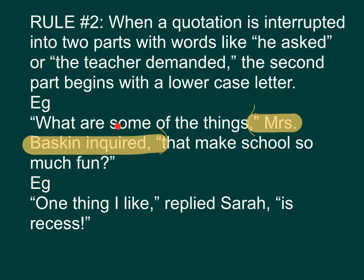讲到差不多，然后中间会加上说话者，说，然后后面呢，就会讲完那句说话的后半部分。这样啦。整句的意思大概就是说，'What are some of the things that make school so much fun?' 就是有些什么使得学校好有趣一点。那里会有个interruption。